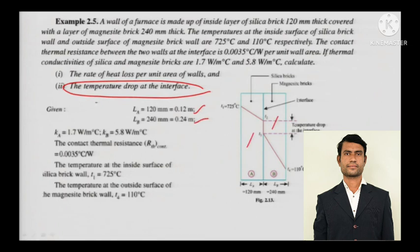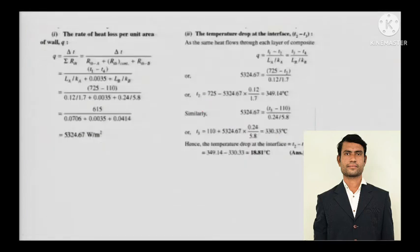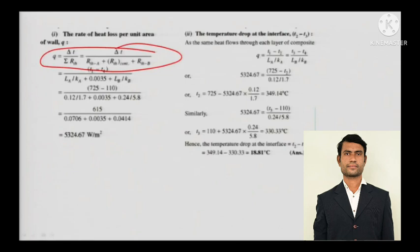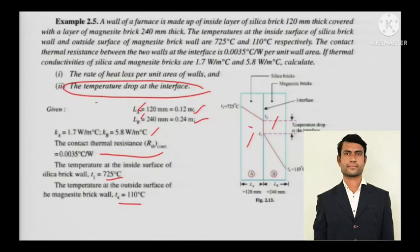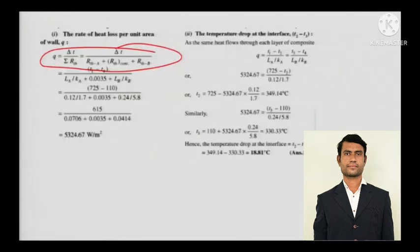Everything is given — KA, LA, LB (thicknesses), and the contact thermal resistance. This is another composite wall problem. Q = delta T divided by the sum of all thermal resistances: R_th_A plus R_th_contact plus R_th_B. The contact thermal resistance R_th_contact is given directly in the numerical. Just solve and calculate Q.